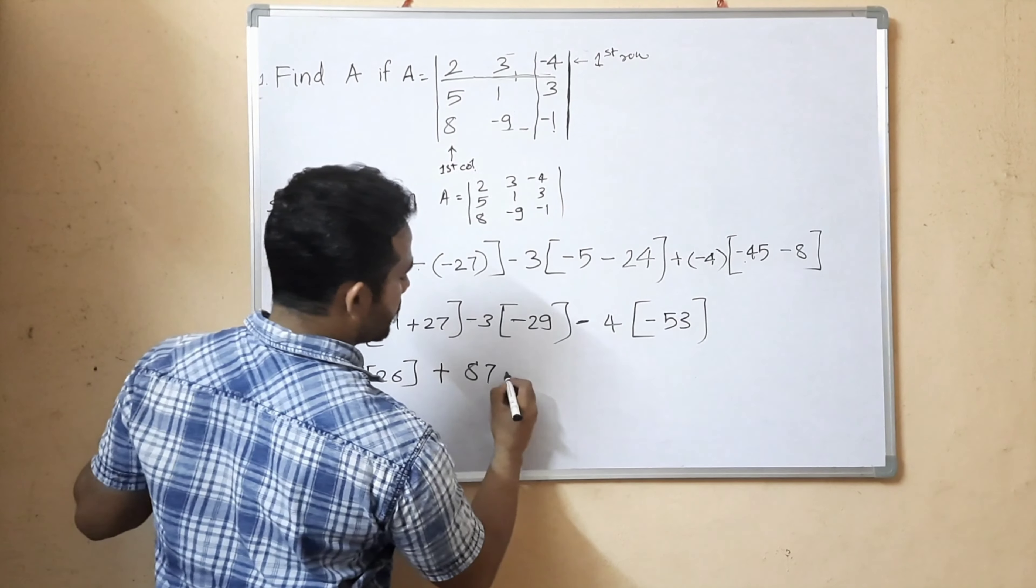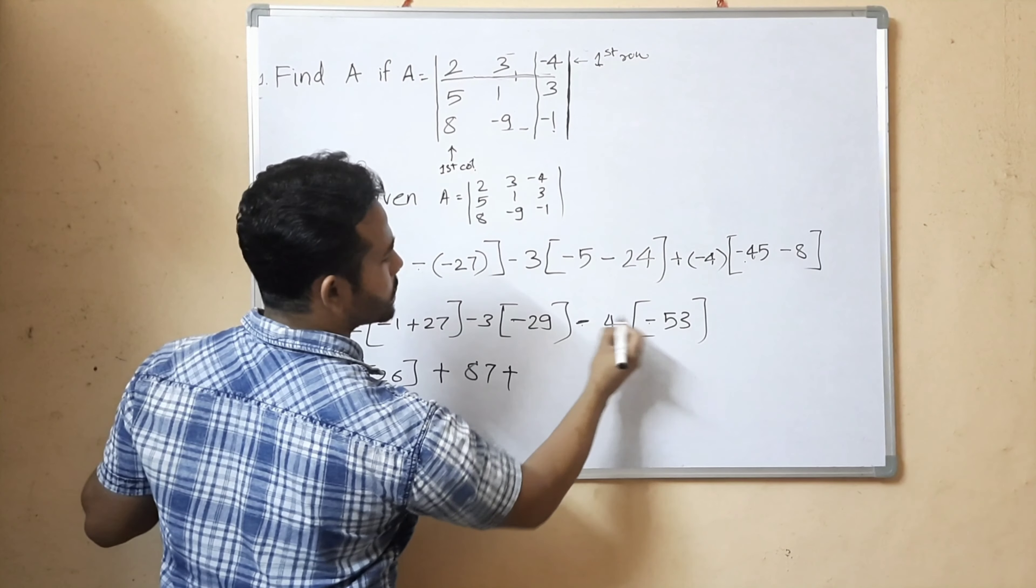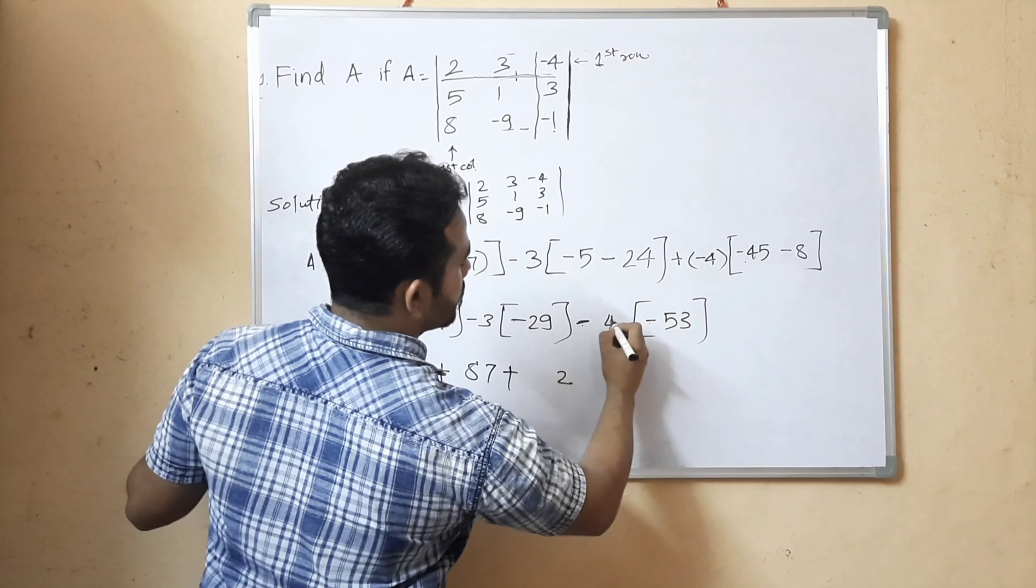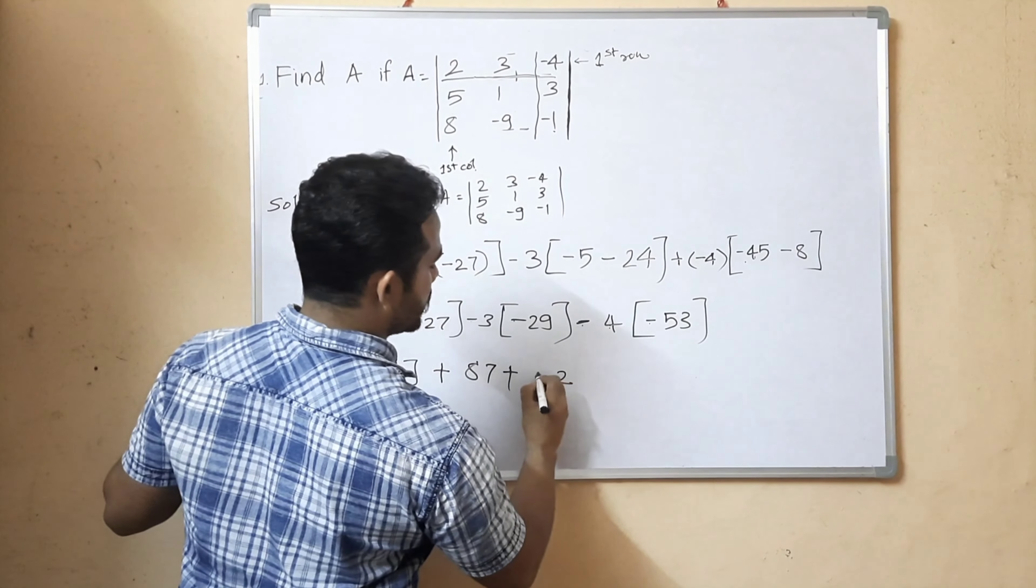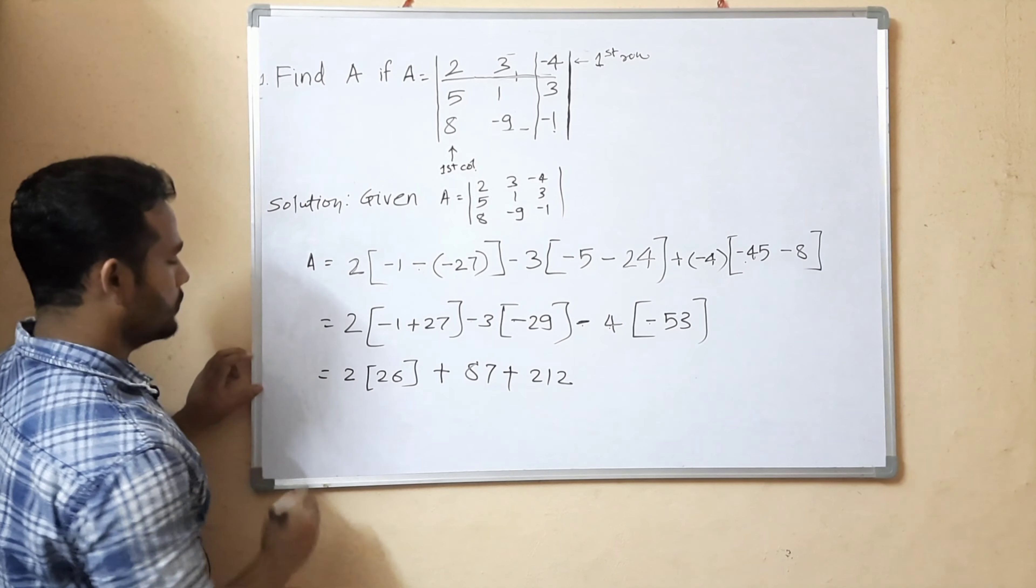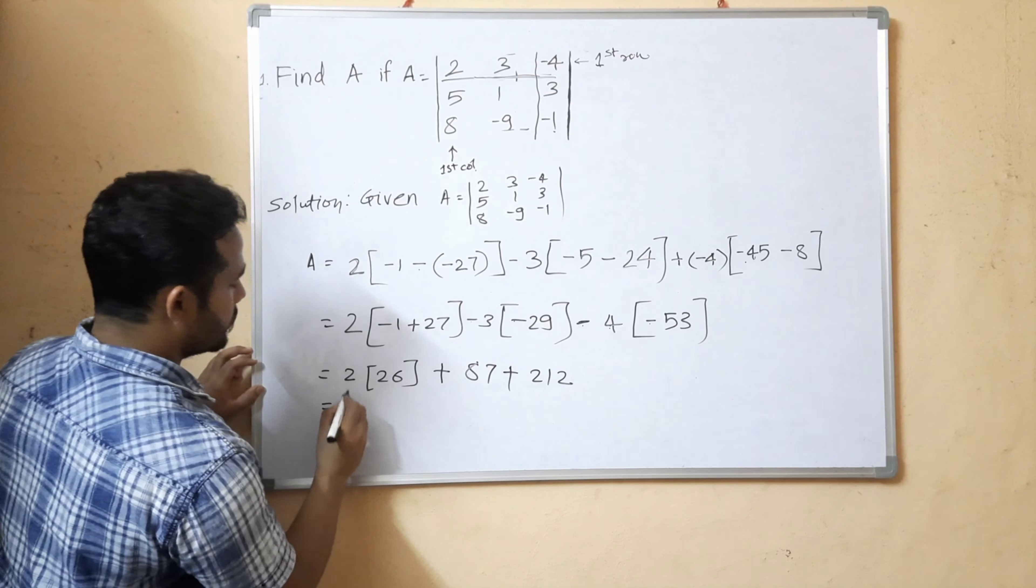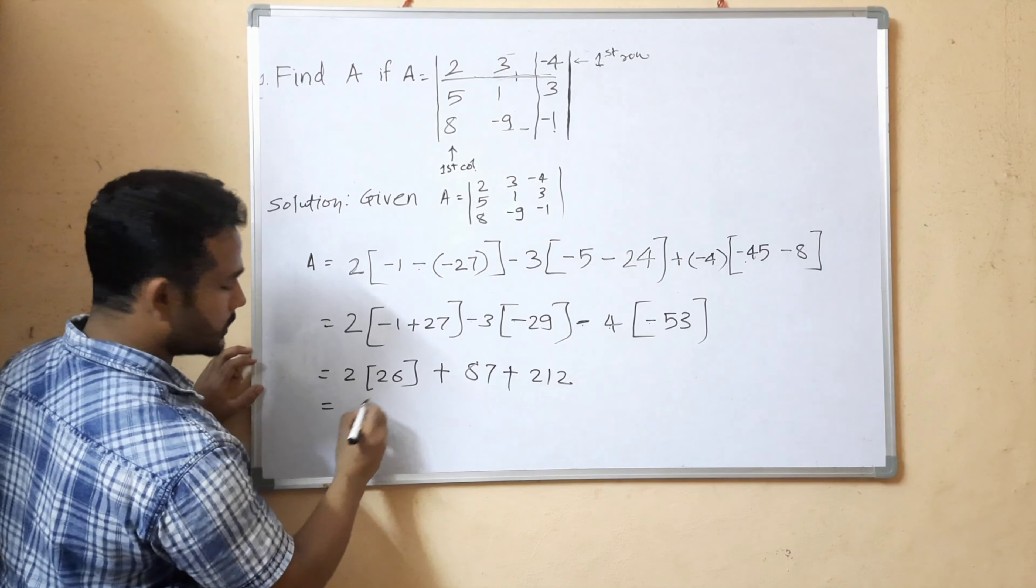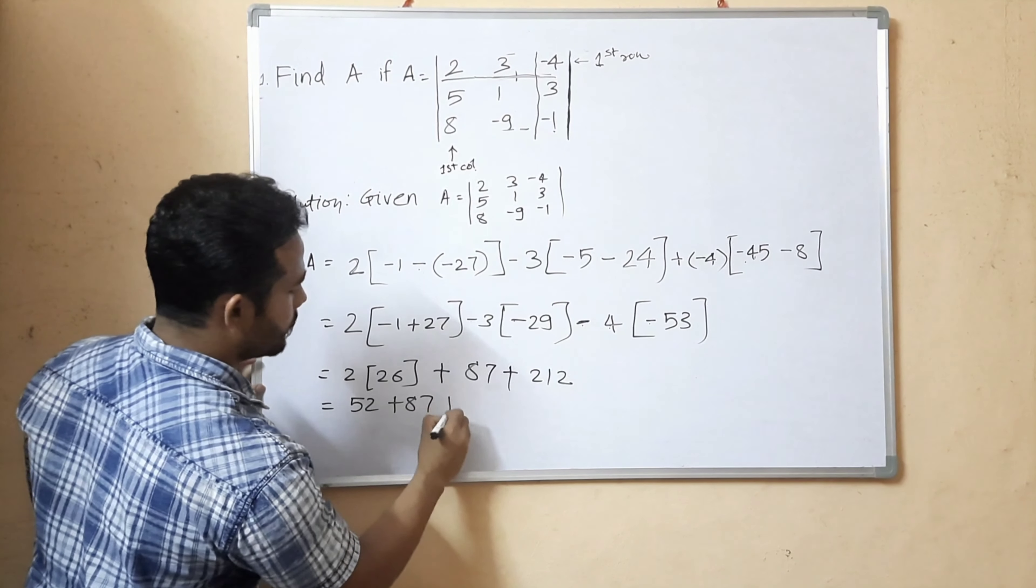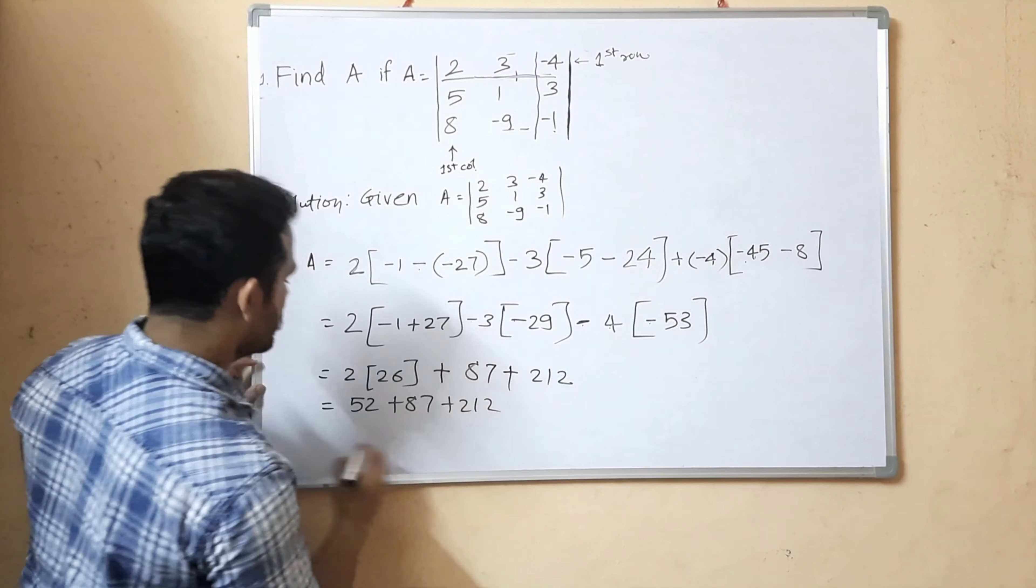Continuing: plus 87 plus minus 4 times 53, which is 212. So we have 2 times 26 equals 52, plus 87, plus 212.